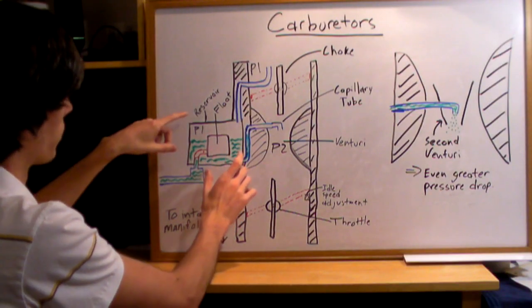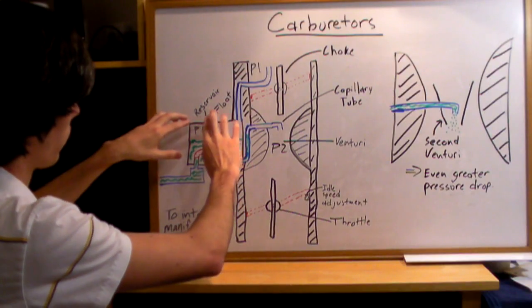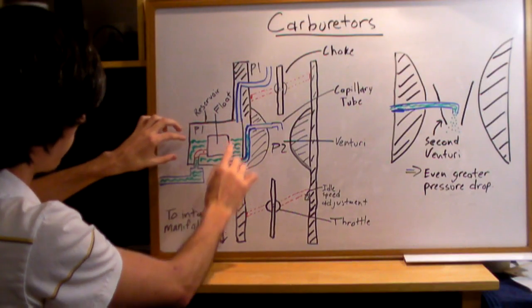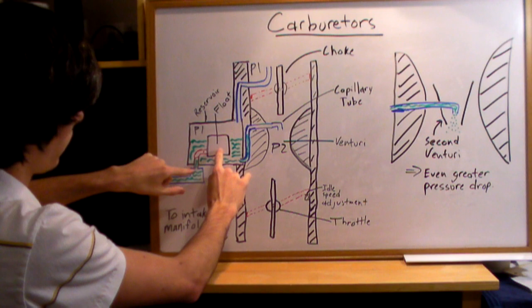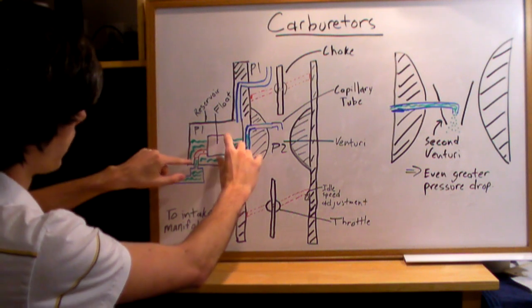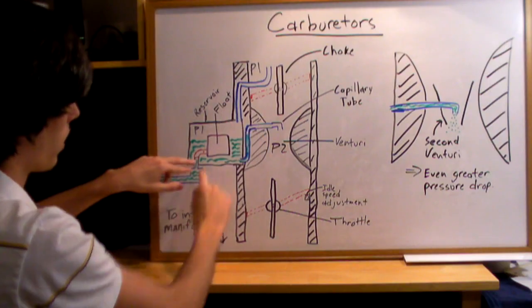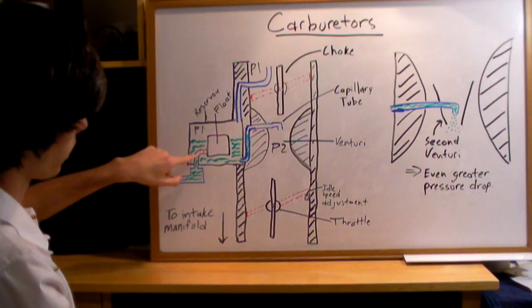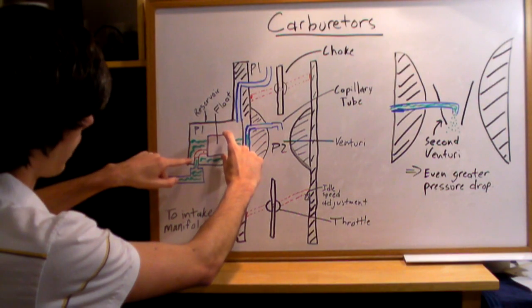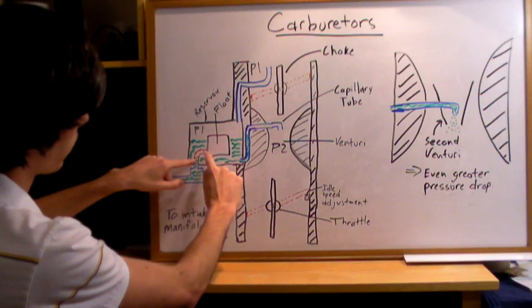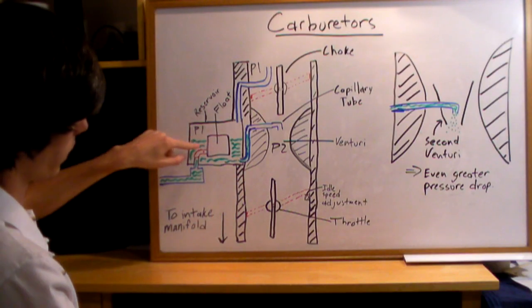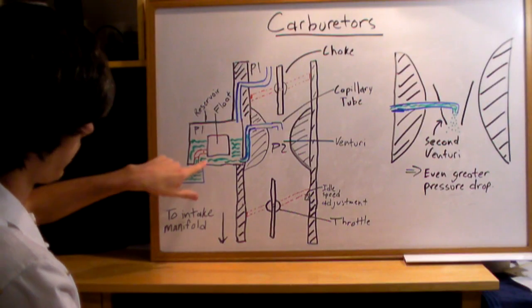Now how this little reserve box works - this reservoir is going to have a float inside. As the fuel increases, the float will go up and hold down this incoming fuel. As it goes down, it's got a little pivot point and it'll open up and allow more fuel to flow in. So this is your fuel intake.